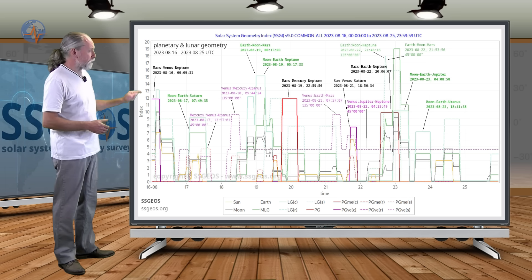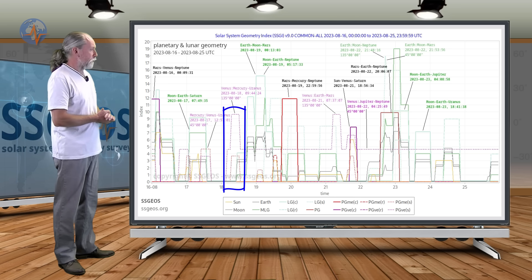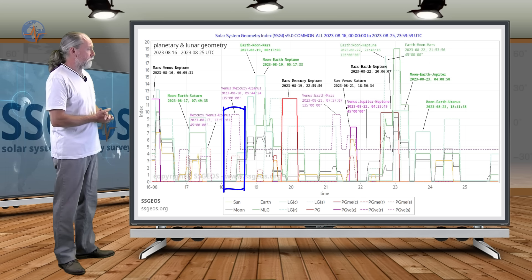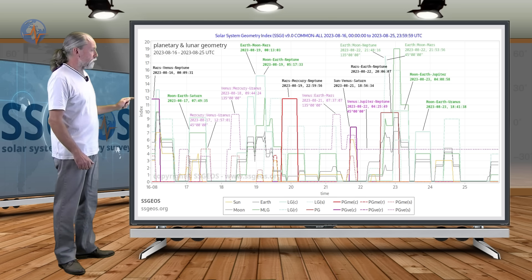We also see some peaks on the dotted lines. That is Venus-Mercury-Uranus, that is 135 degrees. That is tomorrow morning. And we see that today there is also already Mercury-Venus-Uranus.